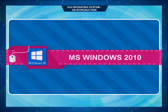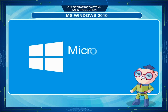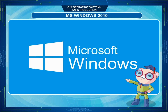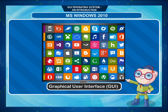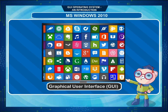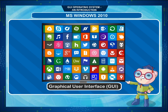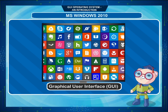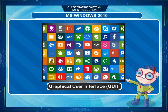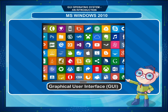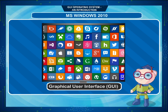Microsoft first introduced an operating environment named Windows in 1994 in response to the growing interest in graphical user interfaces or GUIs. Windows 10 is the latest and most popularly used version of the Windows operating system, introduced by Microsoft in 2015 for use on personal computers, PCs, laptops and notebooks.